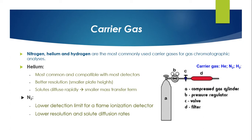Helium is the most common carrier gas and is compatible with most detectors. It provides better resolution and smaller plate heights. Solutes diffuse rapidly, giving a smaller mass transfer term, and it provides a lower detection limit for a flame ionization detector.